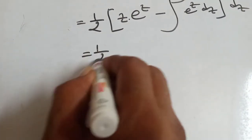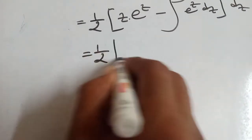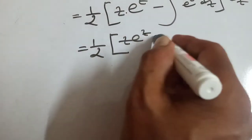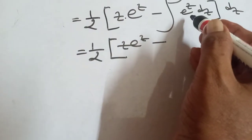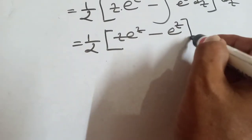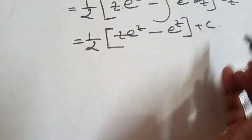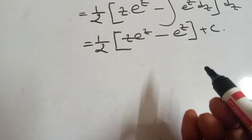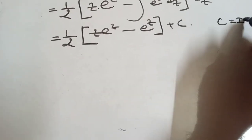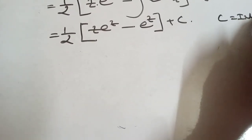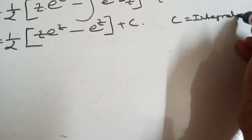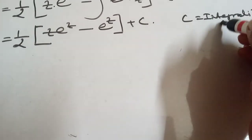Now, 1 by 2, third bracket: z e to the power z minus integration of e to the power z means e to the power z, plus c — where c is the integration constant.